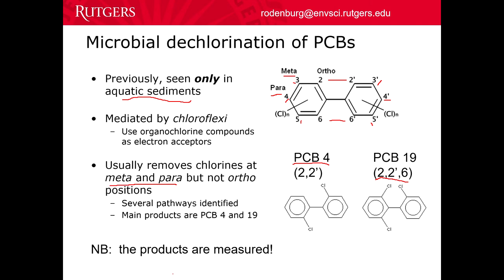So those are the key indicators — the end products that you look for. You remove some of the chlorines, but not all, so the product is still a PCB molecule and therefore it still gets measured when you do a measurement of all 209 PCBs. So this is the great thing about it — the products are measured.